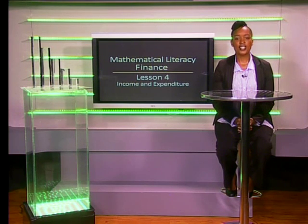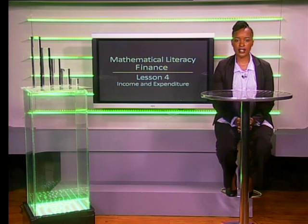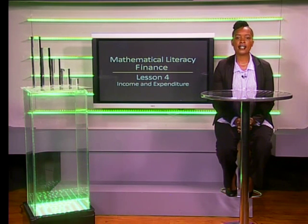Hello Grade 10s. Today we are going to design a worksheet to calculate our personal income and personal expenses in a small household, and understand how a household budget works. We are going to begin by joining Lebo and her friends. They have been collecting information through a questionnaire on how their peers spend their pocket money. Lebo wants to use this information to justify asking for an increase in her allowance. Let's see how they are doing.